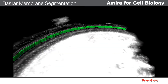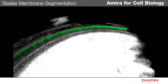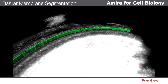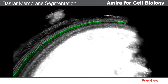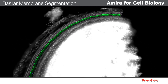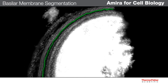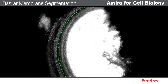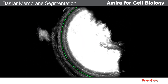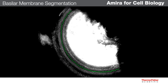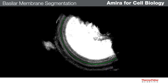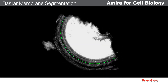In the end, we have a segmented representation of the basilar membrane, which in 3D looks like a wall separating the inner and outer hair cells. Since this workflow is not trivial, we can save it as a template so it can be applied to future data sets with a single click.